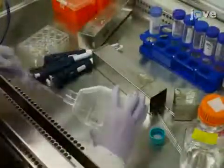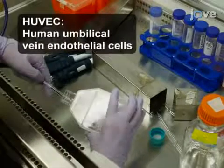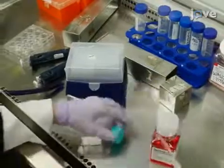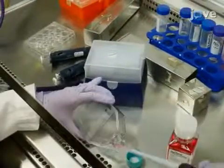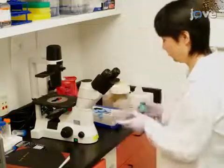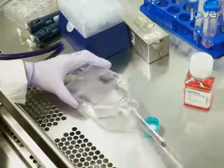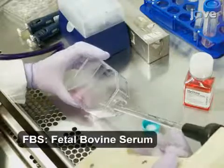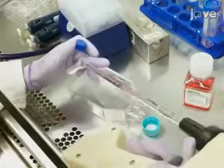After 30 minutes, wash the HUVECs once with PBS without calcium and magnesium and add 1 mL of 0.05% trypsin EDTA. Subsequently, incubate the cells at 37 degrees Celsius for 1-5 minutes and check them every minute until most cells round up. Then dislodge the cells by tapping the flask. Afterward, add 5 mL of basal medium with 1% FBS to the flask. Transfer the cells to a 15 mL tube, then centrifuge the cells.